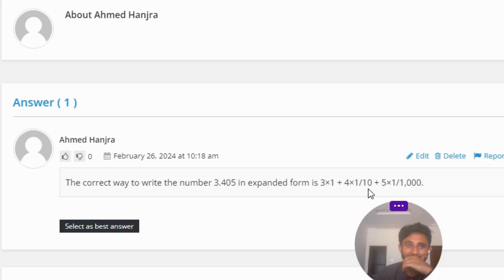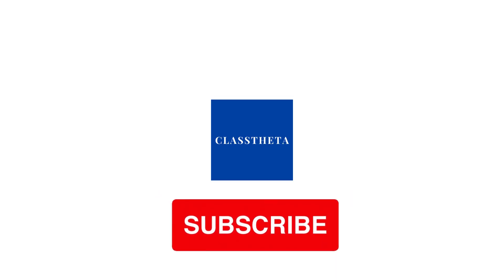multiply 1 plus 4 multiply 1 divide 10 plus 5 multiply 1 divide 1,000. So that is the correct answer to the question. If you have any questions or comments, I will answer them.